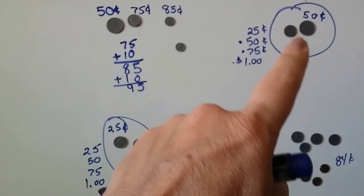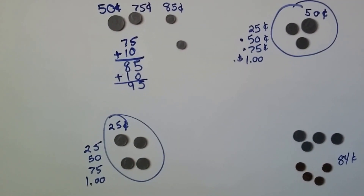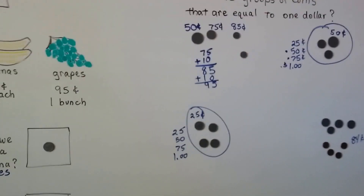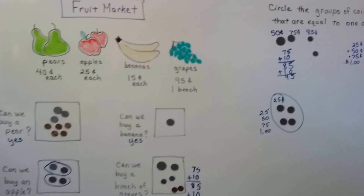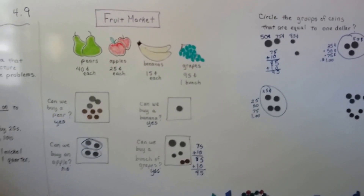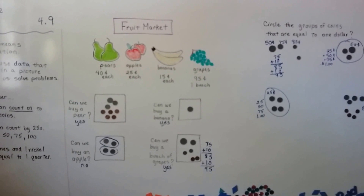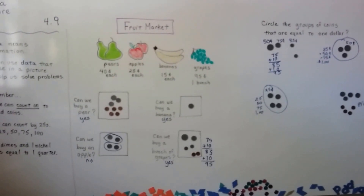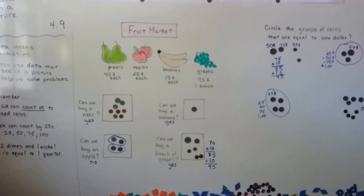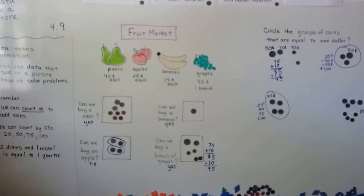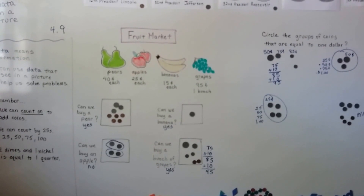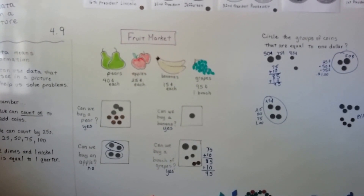So we found two groups that equal a dollar: a half dollar with two quarters, and four quarters. Remember, when you are shopping and you see pictures with price tags, that tells you how much the item is and you can count your money to see if you have enough. See you next video — I'm going to talk about counting the change we get back when we have too much money.